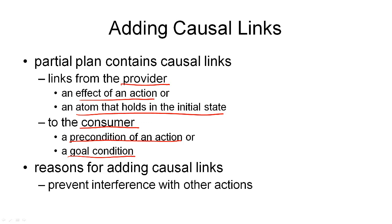Also, while the provider must come before the consumer, it doesn't necessarily have to come directly before the consumer — there may be other actions in between those two. The main reason for adding causal links to a plan is to prevent interference between the different actions in a plan. So, for example, if we add a new action to the plan after we have inserted a causal link, and the new action could come between the provider and the consumer, then we have to make sure that none of the effects of that action interfere with the condition that is protected in the causal link. Also, causal links help us to keep track of preconditions that we have already achieved. If we have an incoming link to a precondition, that means this precondition is somehow achieved in the plan, and we no longer need to worry about it.